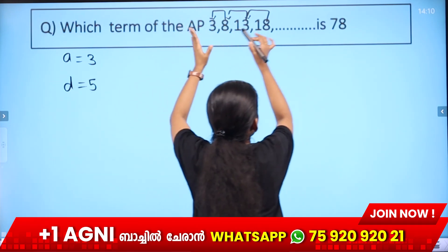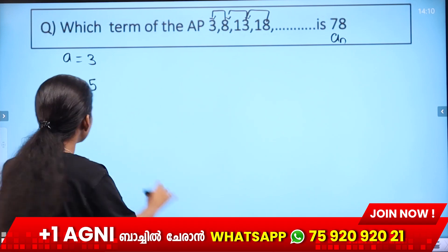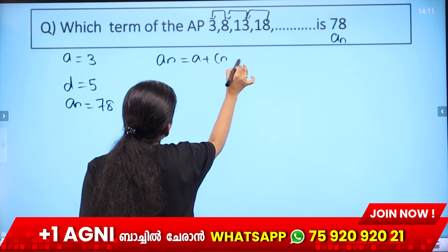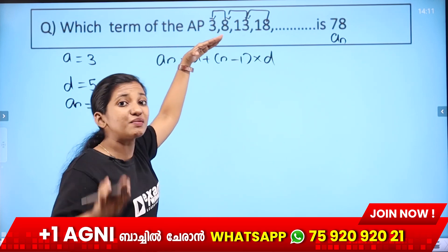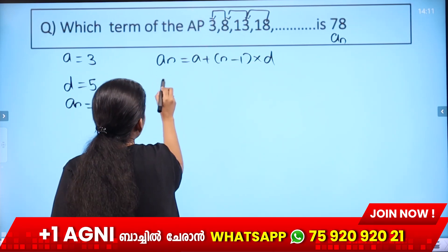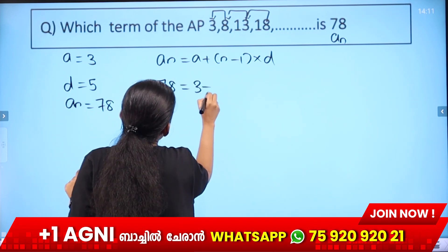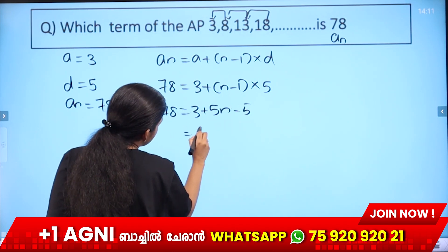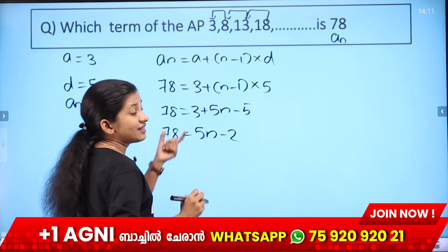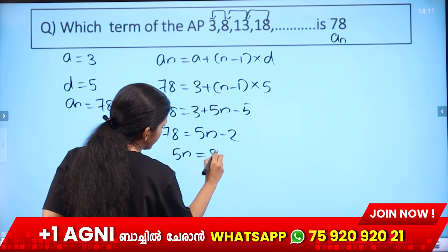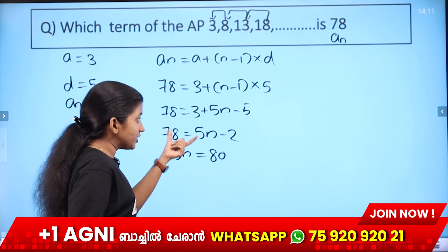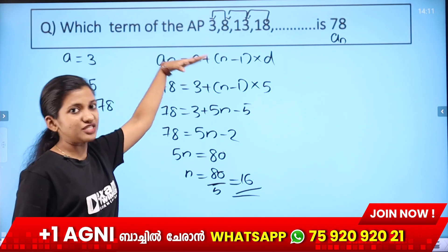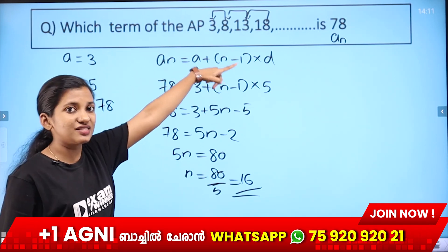In this arithmetic progression, the last term an equals 78. So: 78 = a + (n−1)d = 3 + (n−1) × 5. That gives 78 = 3 + 5n − 5 = 5n − 2. Then 5n = 78 + 2 = 80. Therefore n = 80 ÷ 5 = 16. So the 16th term of this AP is 78.